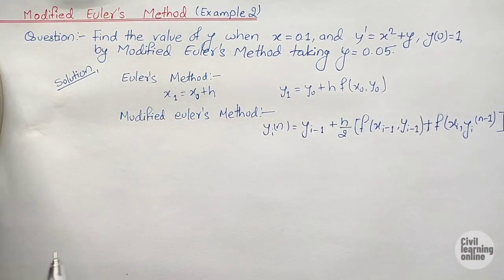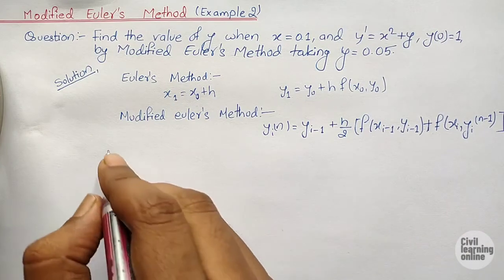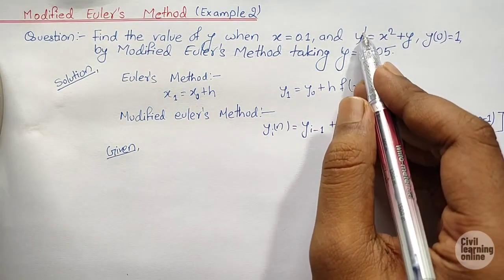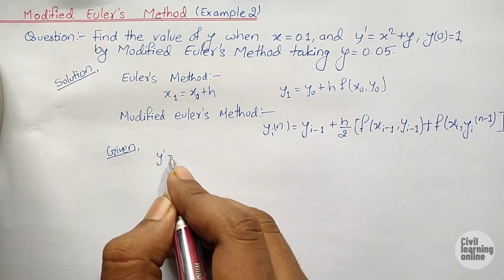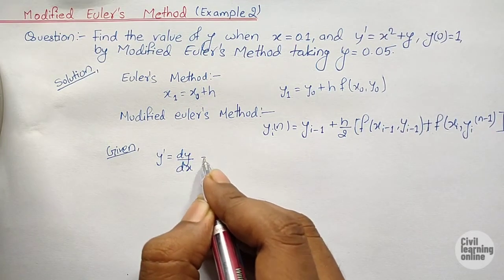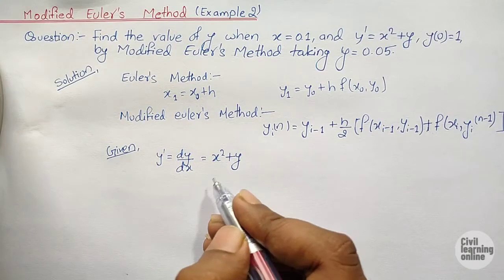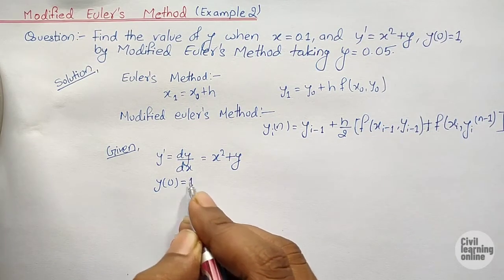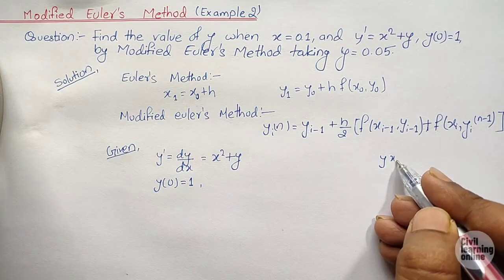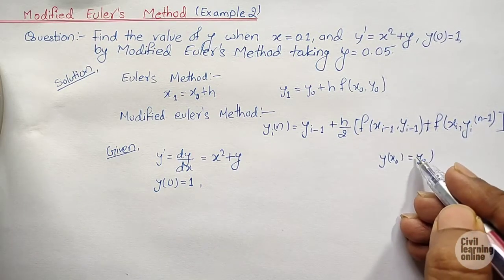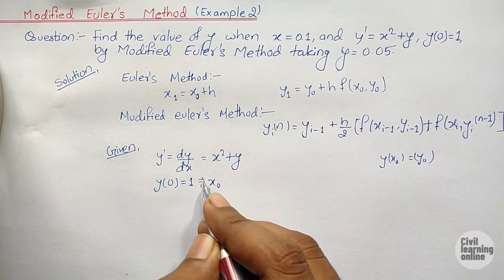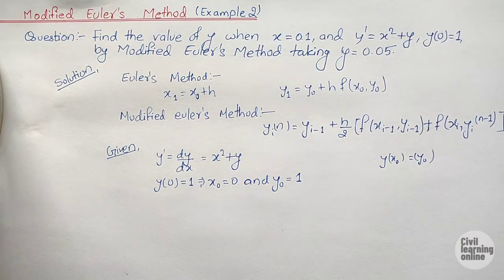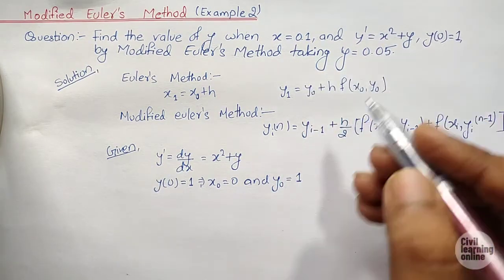In the exam, let us first write down what we are given. We have y dash equals dy/dx equals x squared plus y, y₀ equals 1. Comparing with the standard notation, x₀ equals 0 and y₀ equals 1. We also have h equals 0.05, as the question has already mentioned.